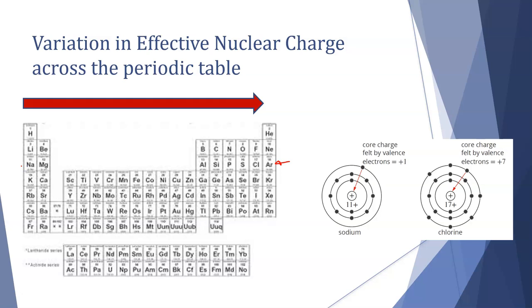Sodium has an atomic number of 11. It will have a complete first shell and second shell, which means its shielding electrons are 10, which means it will have a plus 1 core charge. We already calculated for magnesium that it was plus 2.